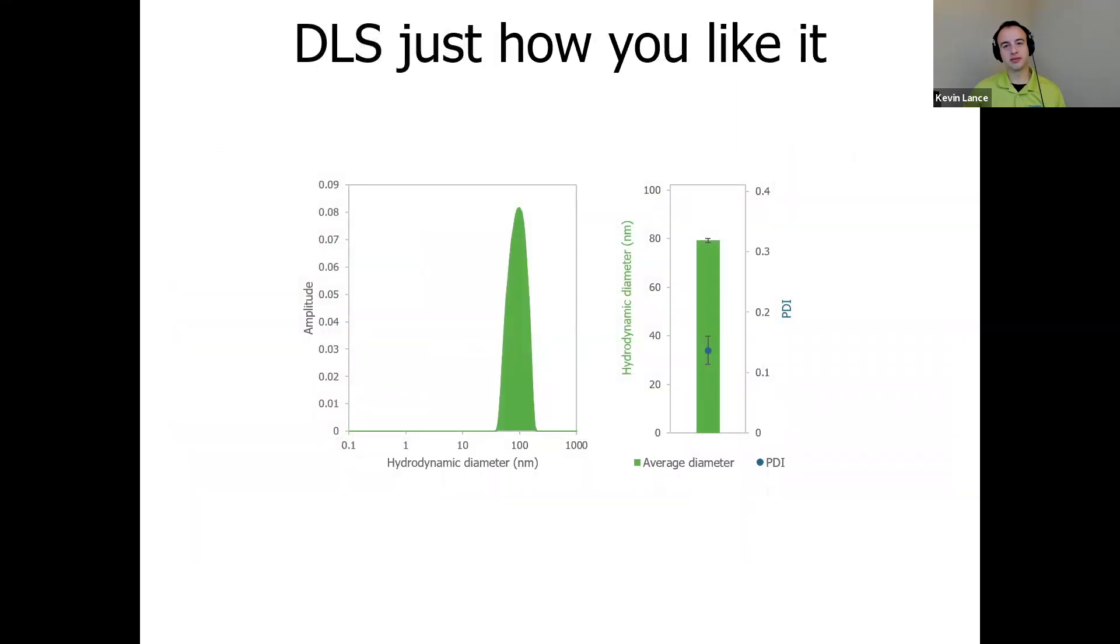Here we're looking at the results from a typical LNP sample. On the left you can see an intensity distribution. The mRNA LNPs tested here had an average hydrodynamic diameter of 79 nanometers plus or minus one percent, which is visualized by the green bar plot on your right and its error bar. Inside that bar plot you can see PDI value as a blue dot with error bars showing a PDI of 0.14 plus or minus 0.02. That's the nice kind of statistics you can get once you can run lots of replicates on DLS using Stunner.